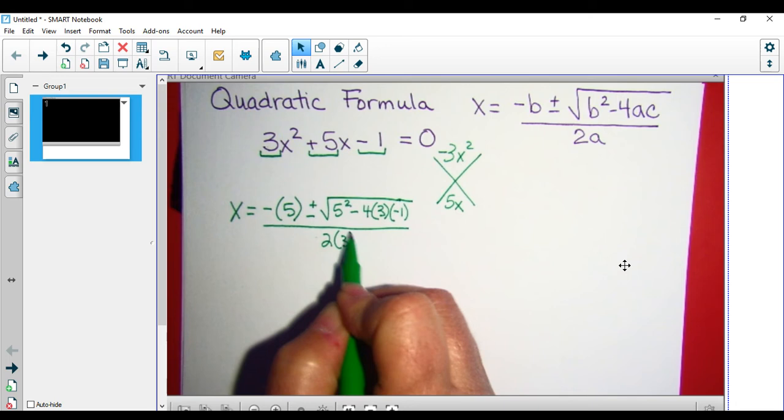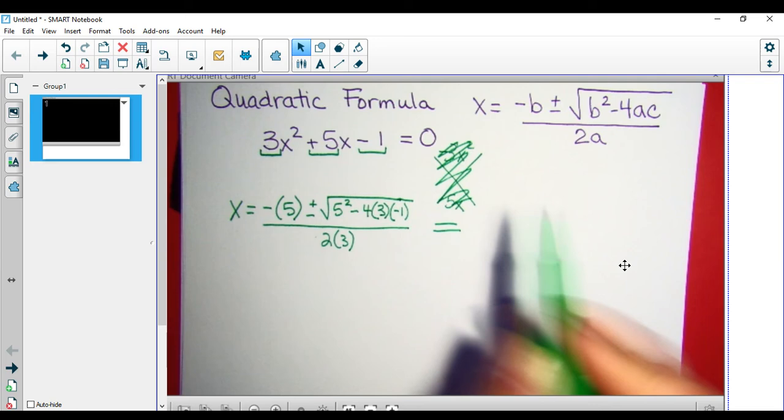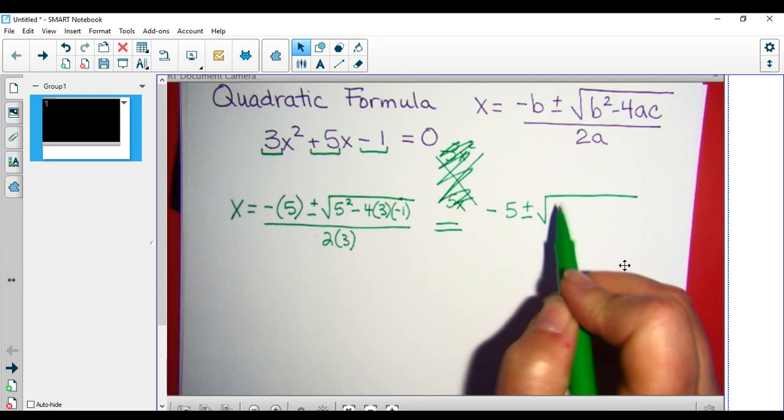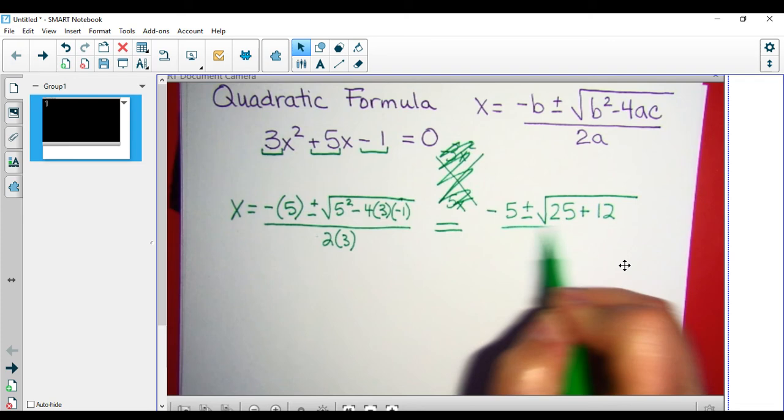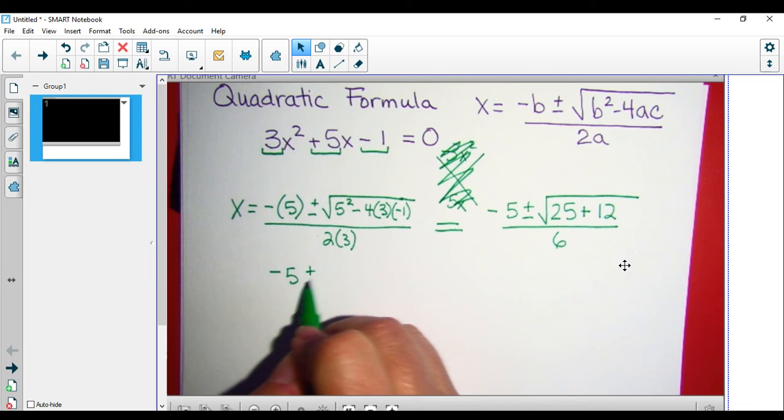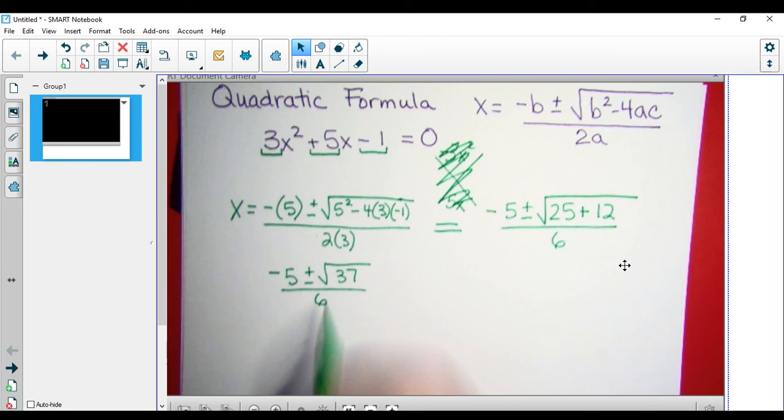And now we just keep simplifying. So we have negative 5 plus or minus the square root of 25 plus 12, all divided by 6.